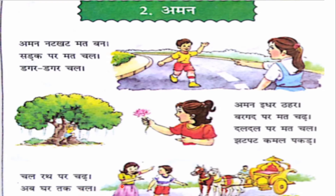So here Aman's sister is telling Aman: Chal rat par chad — rat means chariot. You have seen this picture? This is rat, a chariot. So Aman, rat par chad — let's sit on this chariot. Aur ab ghar ta chal — ghar means house, home. Ab ghar ta chal. We'll sit on this and go home.